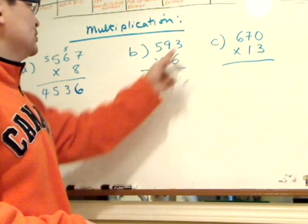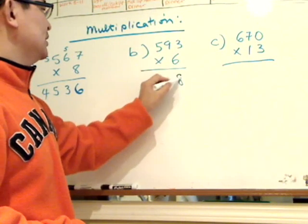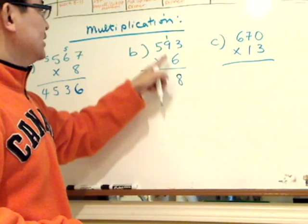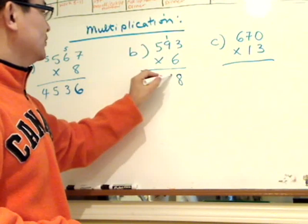Let's look at the second one. Okay, so three times six is 18, carry the one. Nine times six is 54 plus one is 55,